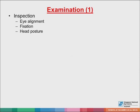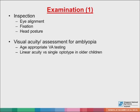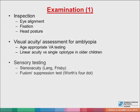In the examination, inspection alone can give you many clues. Look for the alignment, check the Hirschberg's reflex, see if there's a manifest strabismus, look for any fixation preference, and look to see if there's any abnormal head posture. Visual acuity assessment needs to be age appropriate. In older children, linear acuity would be preferred over single optotype testing, as the latter tends to underestimate the degree of amblyopia as it lacks crowding. Check stereoacuity if possible in older children, and look for any fusion or suppression using the Worth four dots.